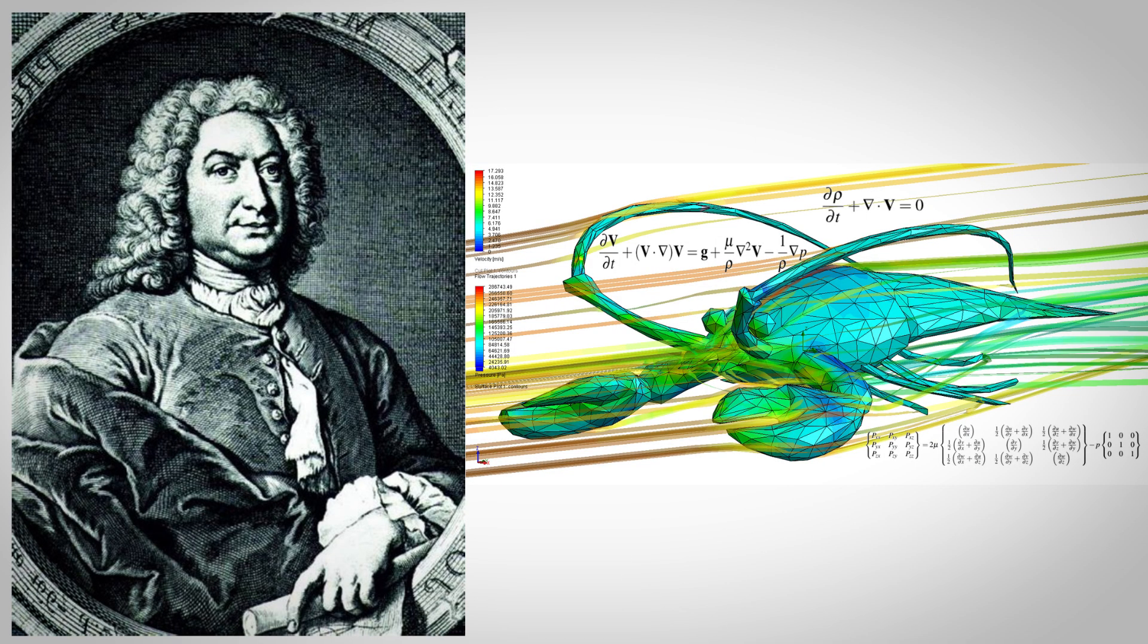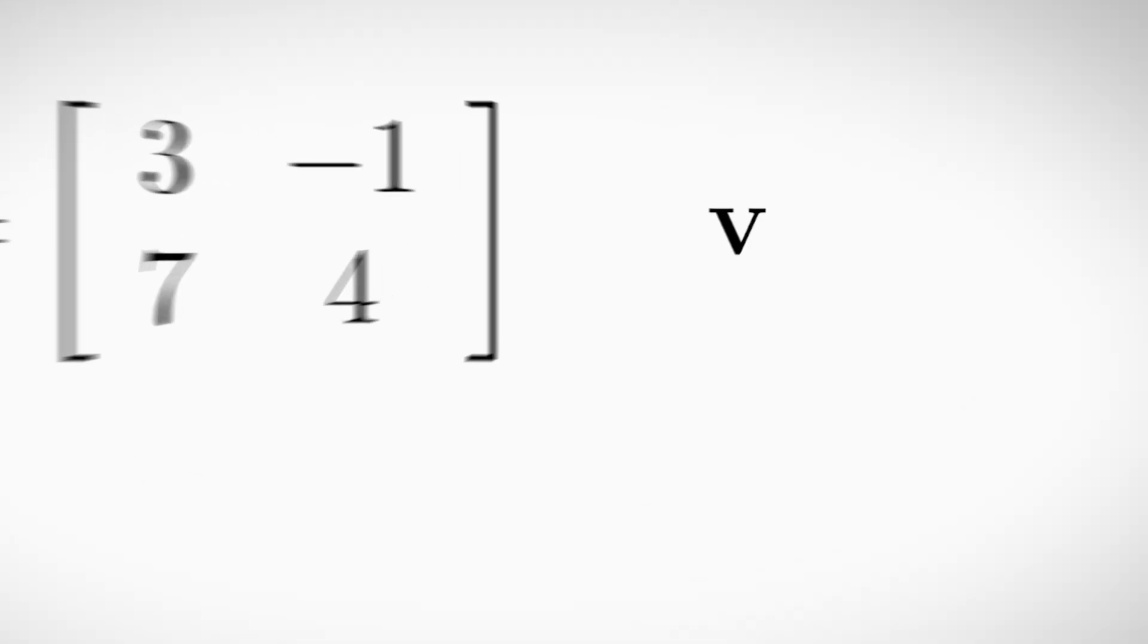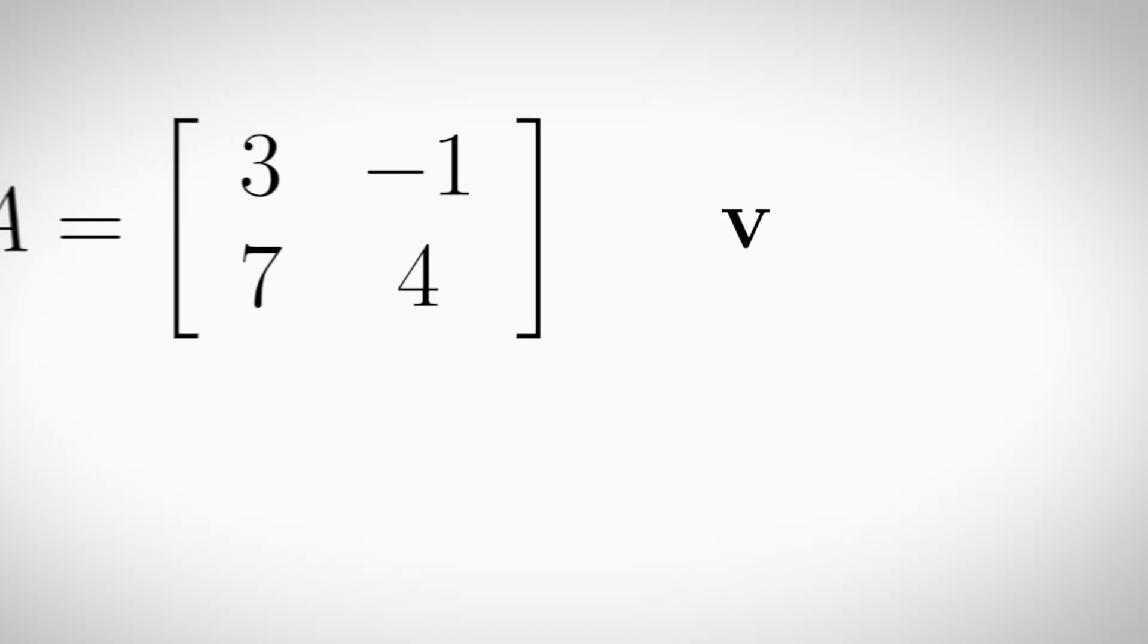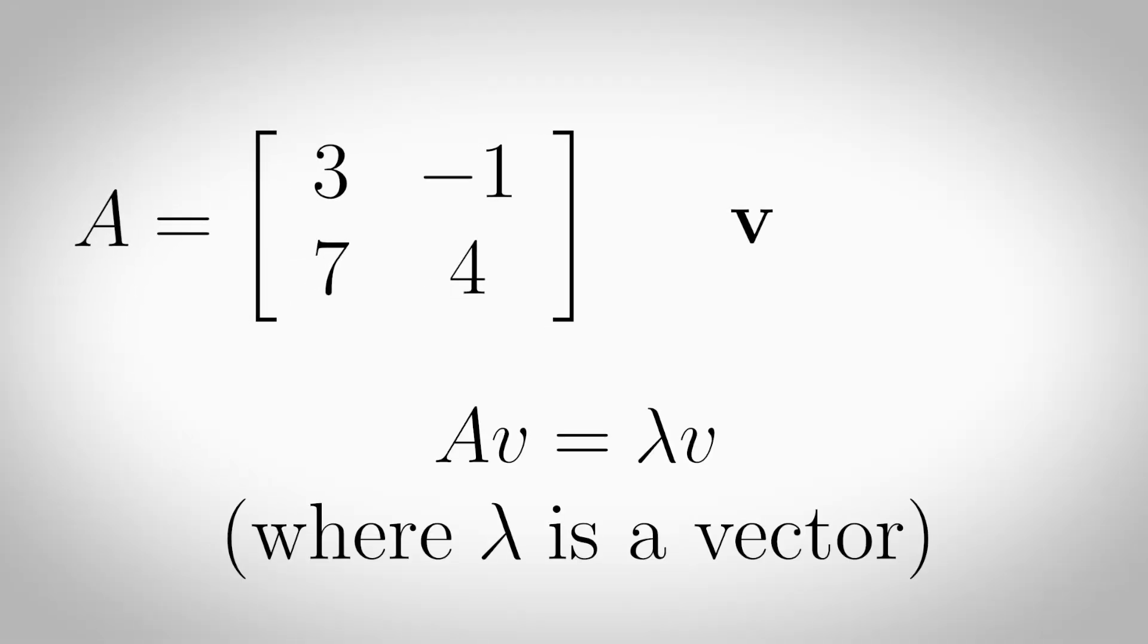Eigenvalues and eigenvectors. Given a square matrix A, an eigenvector v is the non-zero vector such that when multiplied by A, it does not change the direction, it only gets scaled. So Av equals λv.